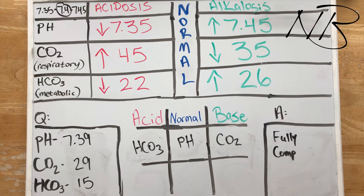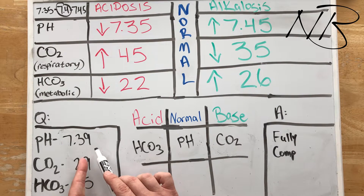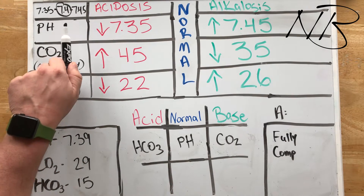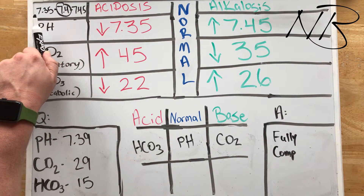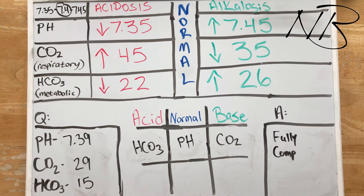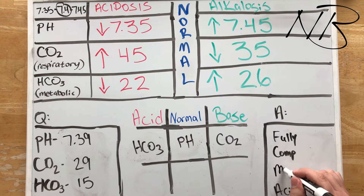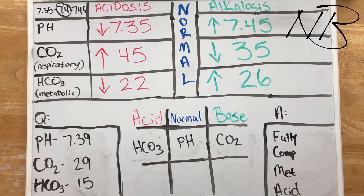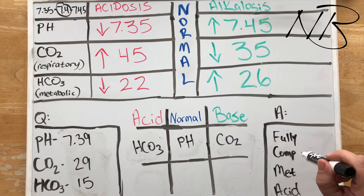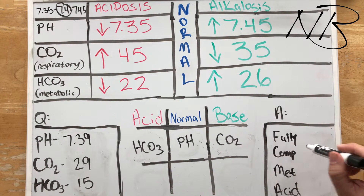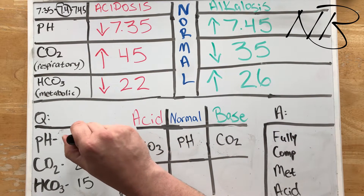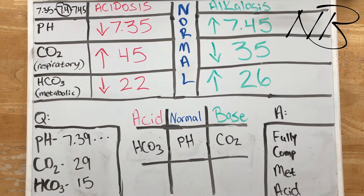We have to figure out whether we're in acidosis or alkalosis — again, we look at the pH. 7.39 is less than 7.4, pushing towards a more acidotic state, so we know immediately we're in a state of acidosis. We look at that respective column and see that bicarbonate is the issue, so we know we are in a state of metabolic acidosis. Our body is successfully compensating — we are fully compensated — and how do we know? Because that pH is normal.